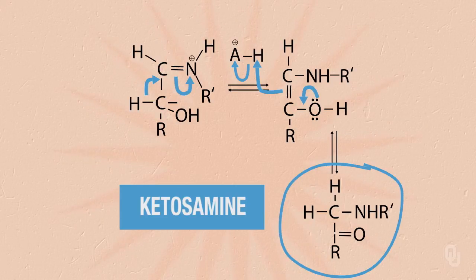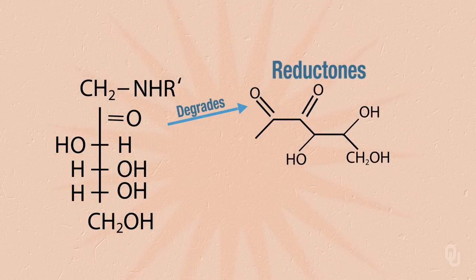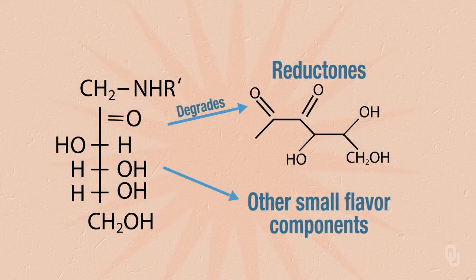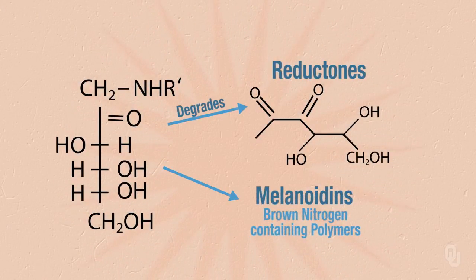The ketosamine then goes through several potential processes. It can degrade to give us reductones, where we have two carbonyls adjacent to each other, or it can create other small flavor compounds — some favorable, some unfavorable. Both the ketosamine and the reductones can then polymerize with other proteins and molecules to give us long-chain polymers called melanoidins. The melanoidins give us the characteristic flavors and colors we expect in beer — those rich, dark tones. The Maillard reaction is essential to beer, giving us the flavors and aromas we're accustomed to, and is very characteristic of certain beer styles.